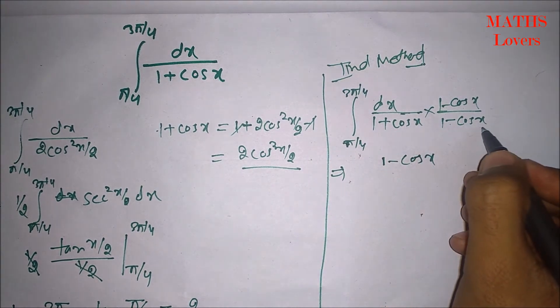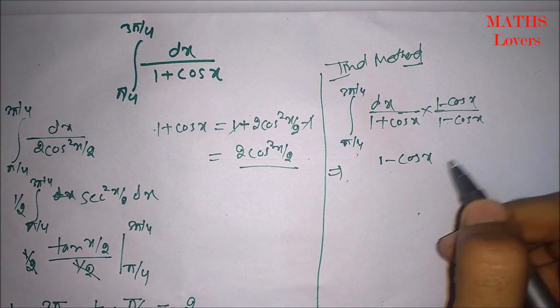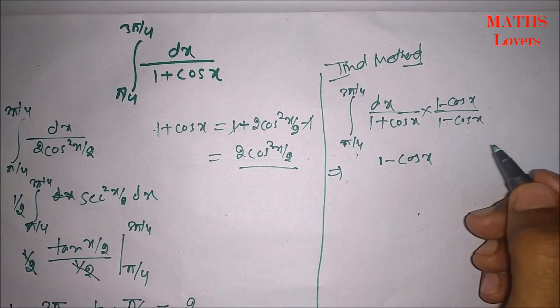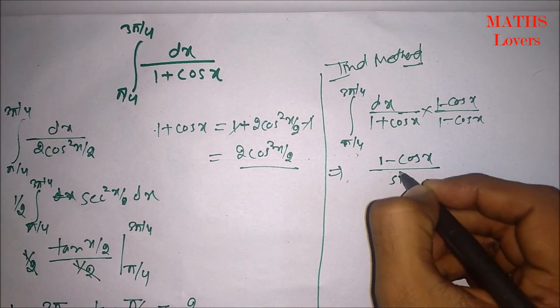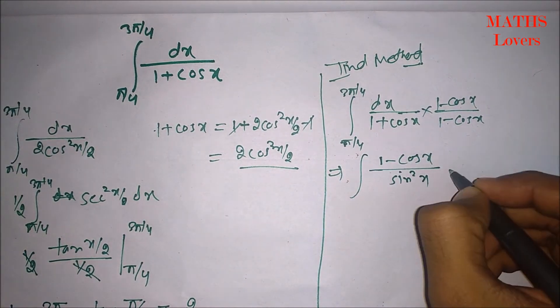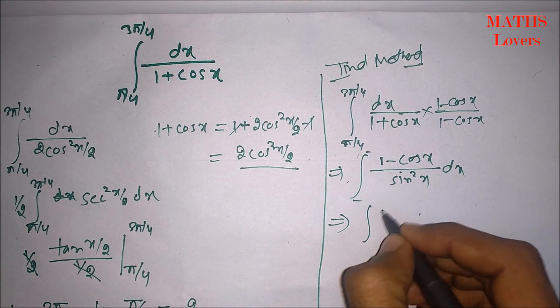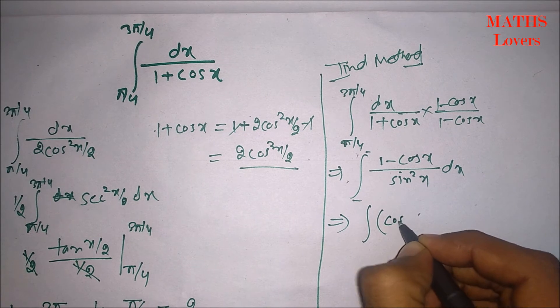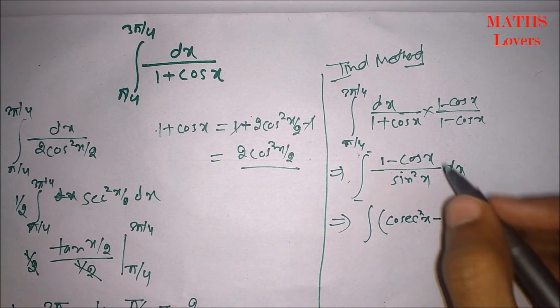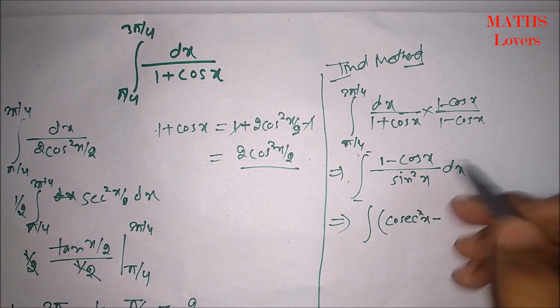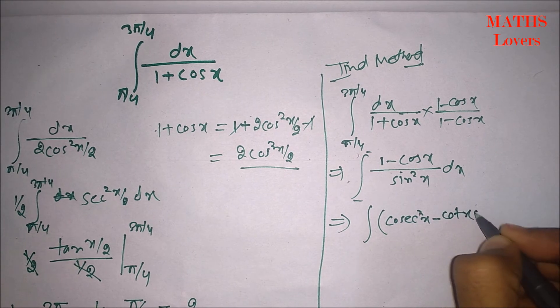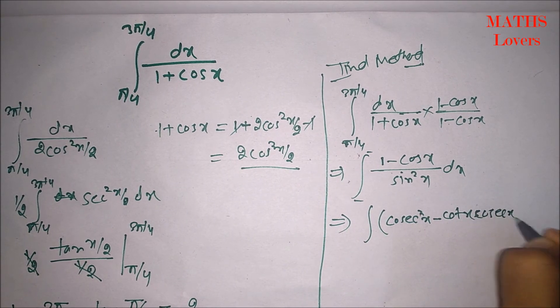1 plus cos x, 1 minus cos x. That will be 1 minus cos square x. 1 minus cos square x will be sin square x. So, here we will write sin square x. So, dx limit will be same. Now, we can write it 1 upon sin square x will be cosec square x minus cos x upon sin square x. That will be cot x.